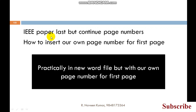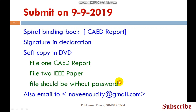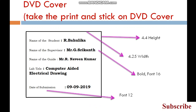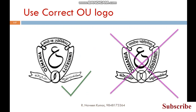You will get two files: one is the CAED report — for example ending at page 37 — and for the IEEE paper you give 38 as the starting page in the second file. Submission is due on 9/9/2019. Submit: spiral binding book of the CAED report with signature in the declaration, soft copy on DVD. The first file is the CAED report and the second file is the IEEE paper. The files should be without password — please remember, don't give any passwords. Also email to nabinouct@gmail.com.